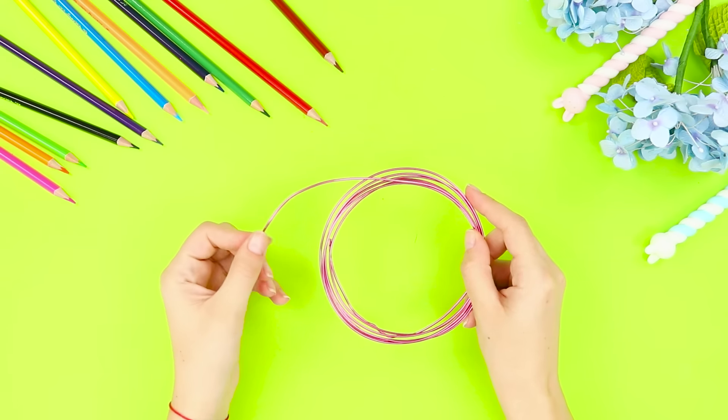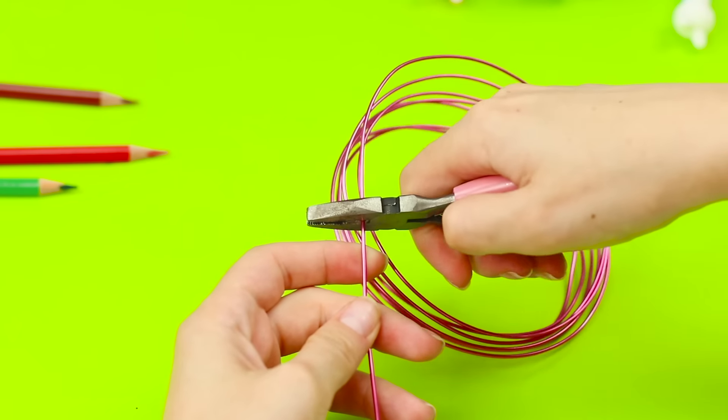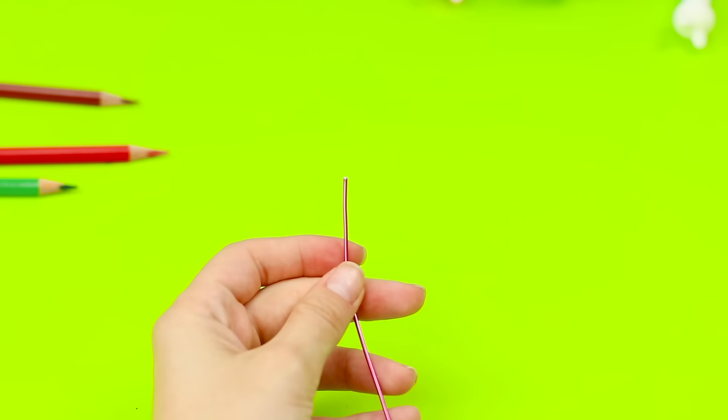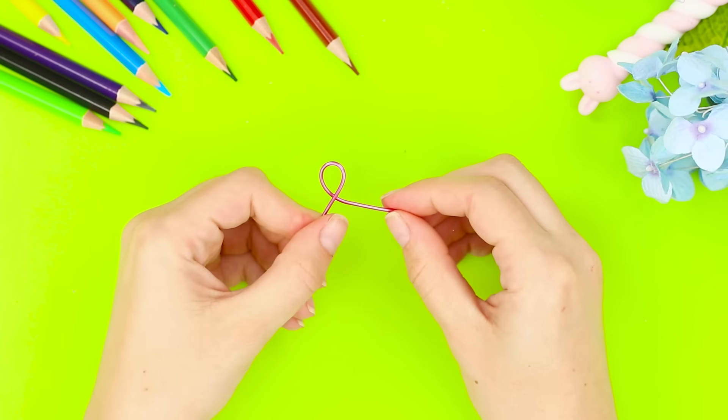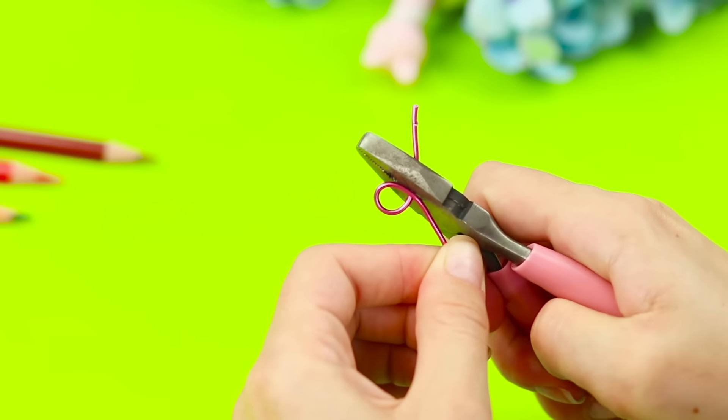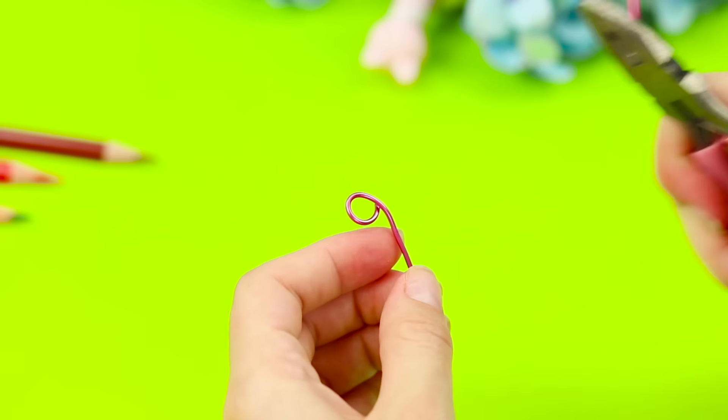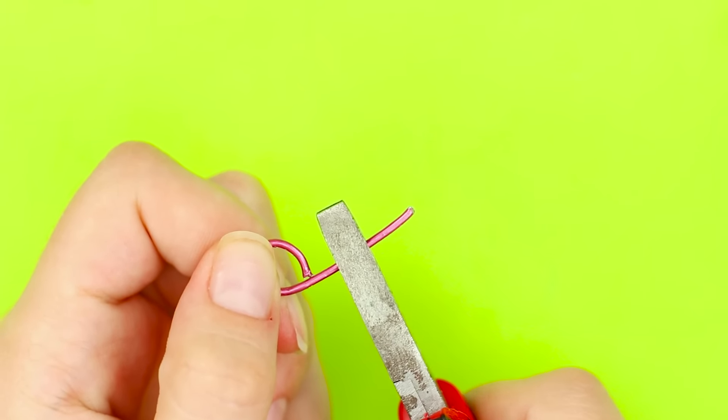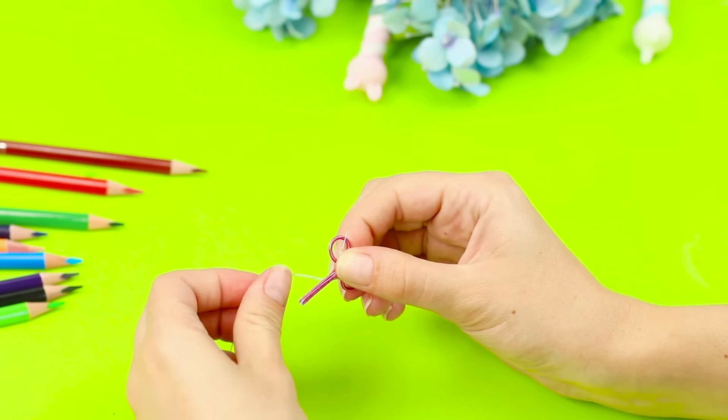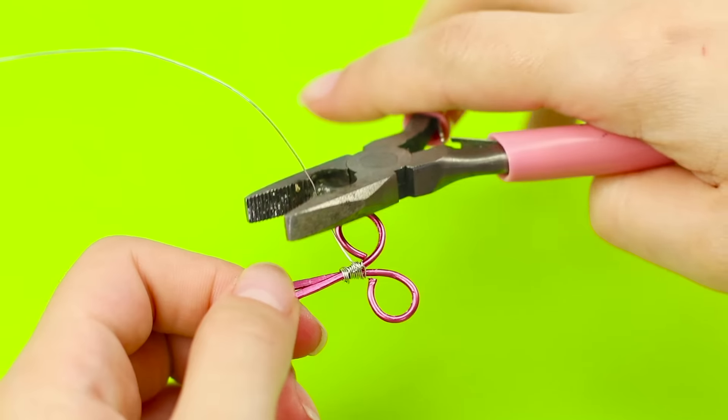For this idea, take a thick wire. Cut off a small piece using pliers and twist it to make a loop. Cut off the extra. Make two of these pieces. Flatten the free ends of the wire using the pliers. Now connect the parts together and tie them with a thin wire.